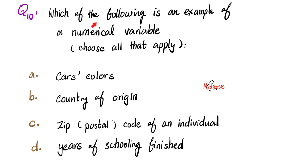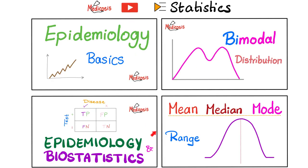And one more question. Which of the following is an example of a numerical variable? Choose all that apply. You are allowed to pick more than one option. Let me know your answer in the comments. You'll find the answer key in the next video in this statistics playlist.